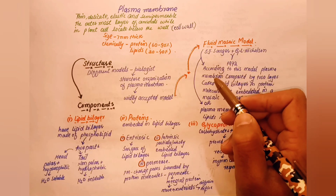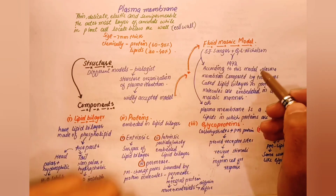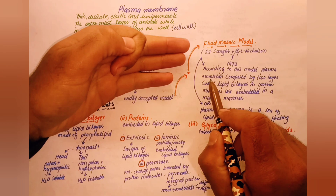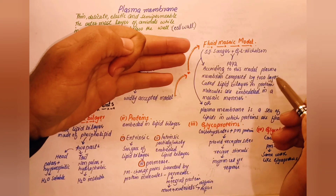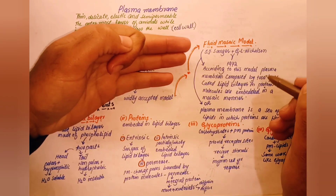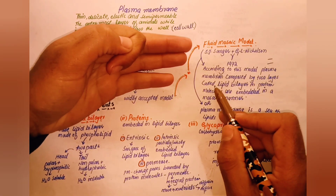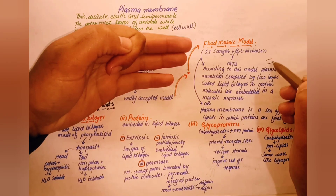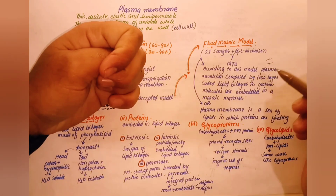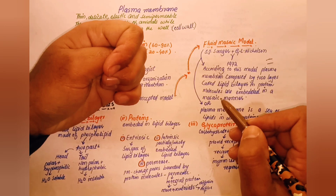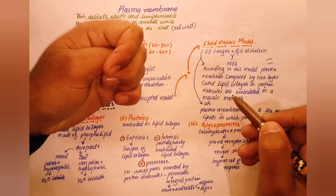According to the Fluid Mosaic Model, the plasma membrane is composed of two layers — a lipid bilayer. The membrane consists of a lipid layer in which protein molecules are embedded.